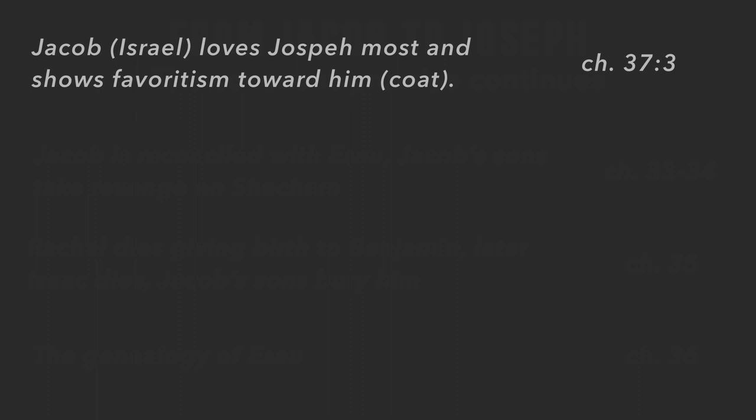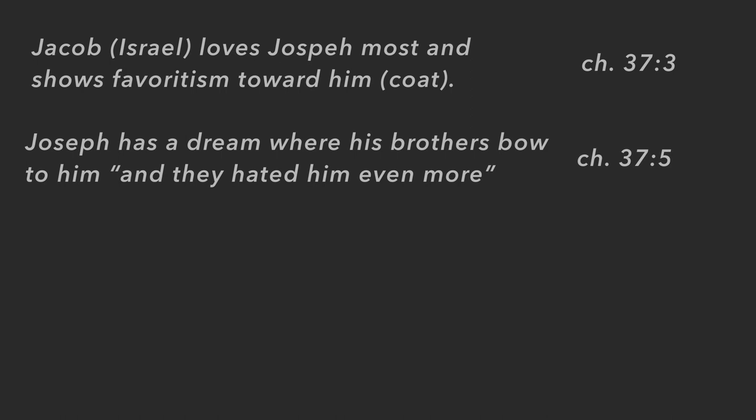We see the same pattern in Joseph's family that existed with his parents. Remember, Rebecca showed favoritism toward Jacob. Now we see Jacob showing favoritism toward Joseph, the second youngest of his sons. Genesis 37:3 says Jacob loved Joseph the most and gave him the famous coat of many colors. This favoritism from the previous generation carried down into his own generation and caused a bunch of problems.